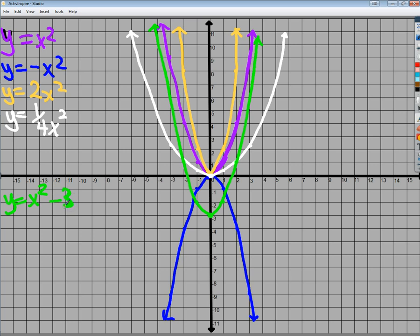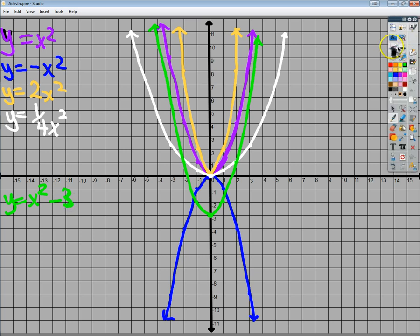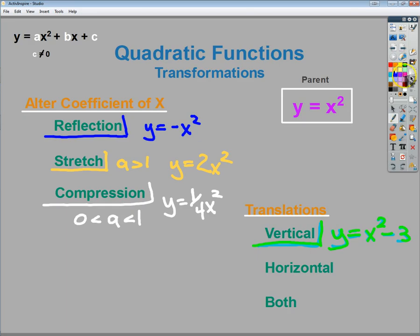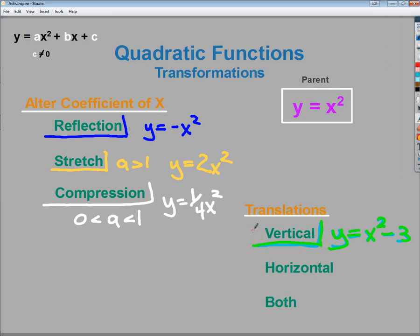Now a horizontal shift, on the other hand, does not work that way at all. It's counterintuitive, in my head at least. So in this case, when I do a horizontal, what I'm going to use is a parentheses. So in this case, I'll do y equals, let's say, x minus 2, and we're going to square that.